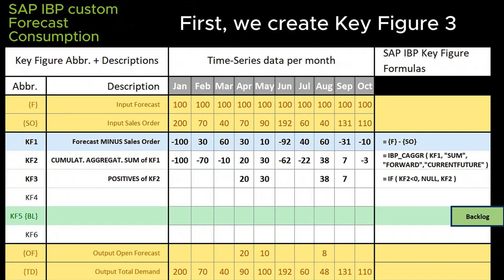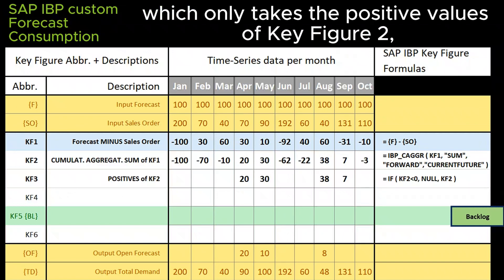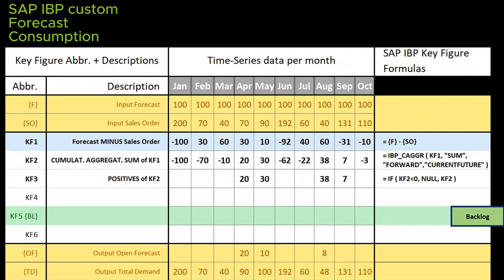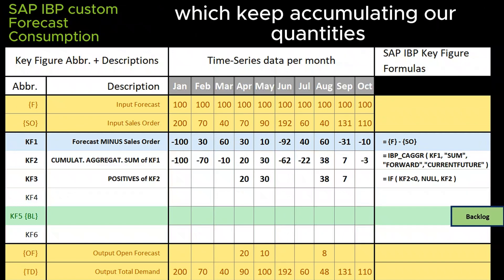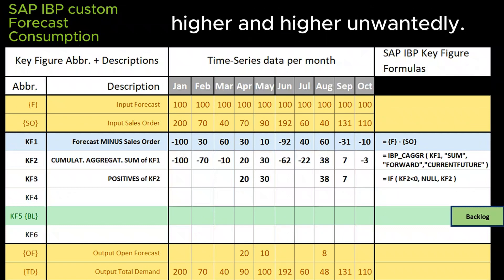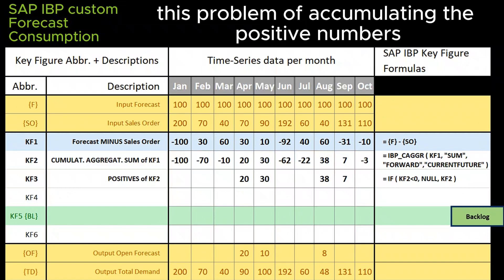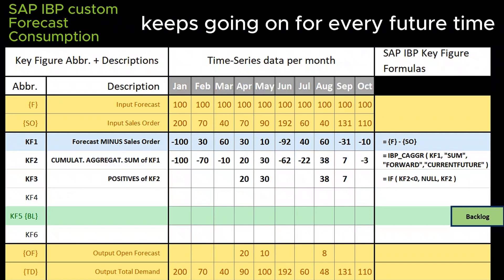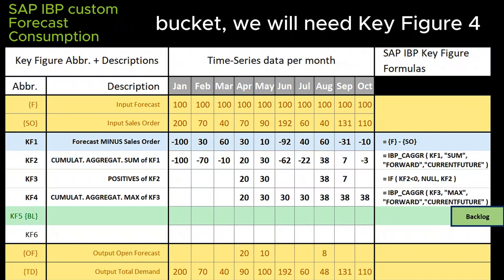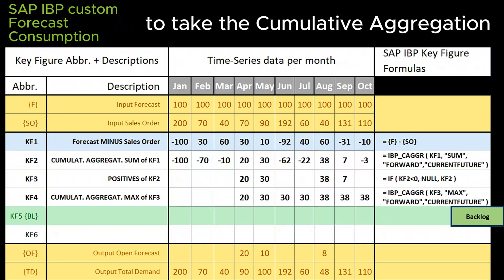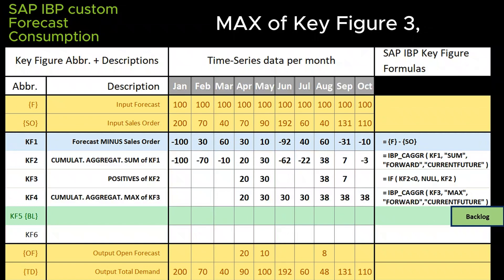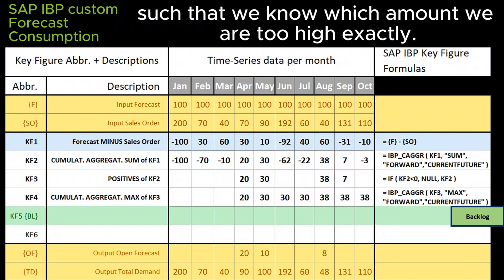First, we create key figure 3, which only takes the positive values of key figure 2, since it is these positive values which keep accumulating our quantities higher and higher, unwantedly. Next, since this problem of accumulating positive numbers keeps going on for every future time bucket, we will need key figure 4 to take the cumulative aggregation max of key figure 3, such that we know which amount we are too high exactly.